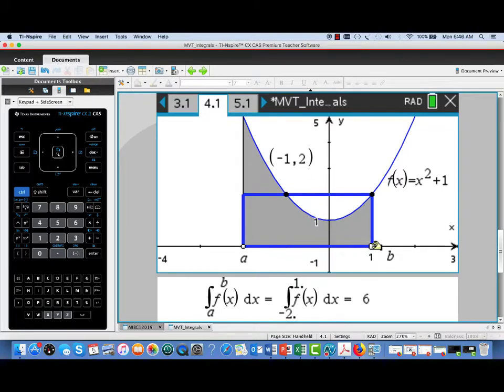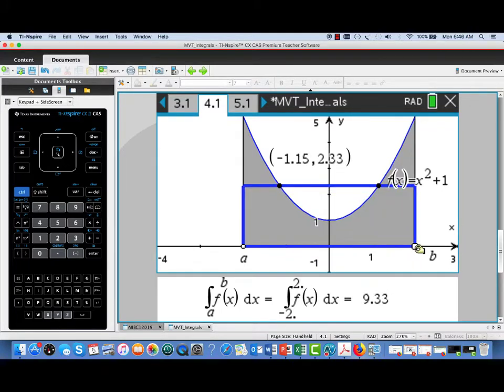I'm going to move b all the way over to positive 2. That will give us a length of interval from negative 2 to 2 of 4. And now I can see there are a couple of points that satisfy the conclusion of the mean value theorem.